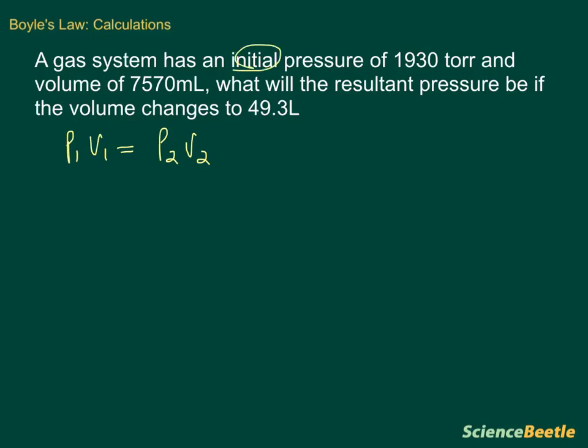We notice here that we see the word initial and pressure. So here is our P1 and we have a volume of 7570 milliliters. This here is our V1. When we look at this, we also see that we need to find the pressure because we don't know. So here's our P2, but we don't know what it is. We're looking for that. And we also know that the volume is going to change and here this 49.3 is our volume 2.